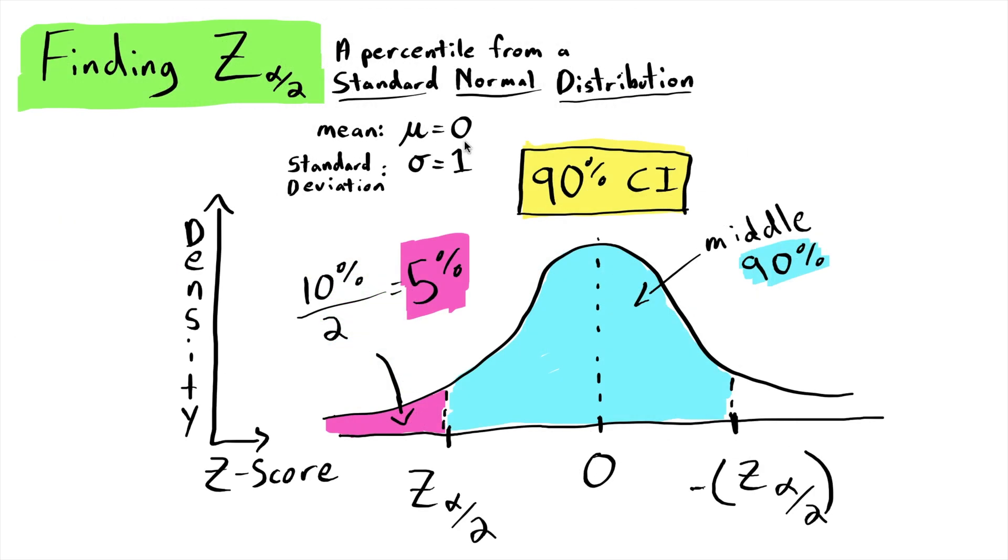A standard normal distribution is the specific normal distribution with a mean of zero and a standard deviation of one. I've done my best to draw a standard normal distribution. And because we're doing a 90% confidence interval, z of alpha over 2 is the cutoff point for the middle 90%. And we're trying to figure out what percentile it is, which means we need to know how much area is to the left of our number. If there's 90% in the middle, then the total area on both of the outsides is 100% minus 90%, which gives us 10%. And then the area that's just on this lower side is half of 10%, 5%.